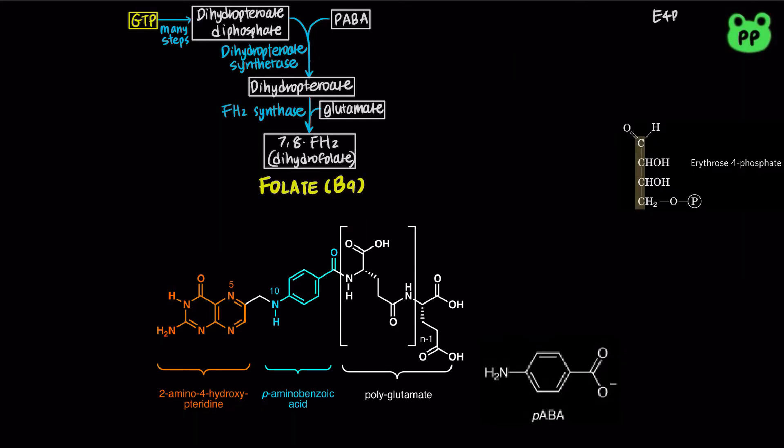PABA is derived from erythrose-4-phosphate, abbreviated as E4P, from the pentose phosphate pathway, as well as phosphoenolpyruvate, abbreviated as PEP, from glycolysis.